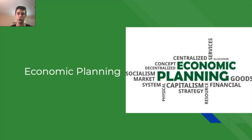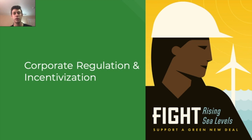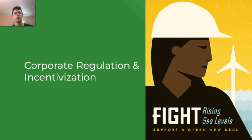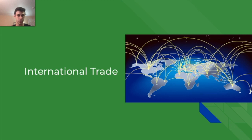The second point is economic planning — transitioning jobs into clean energy through government-funded training or government loans to create clean energy cooperatives using the Cleveland/Evergreen model. The third point is corporate regulation and incentivization, which includes carbon emissions caps for companies, promoting zero-emission vehicle manufacturing, subsidizing solar and wind energy as well as responsible land stewardship, cutting subsidies to dirty energy, and enacting no new coal-fired plants and no more pipeline projects.